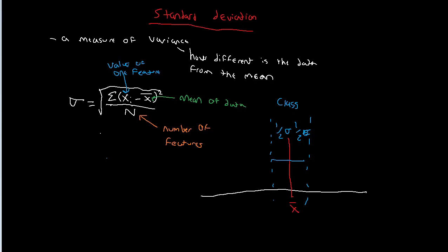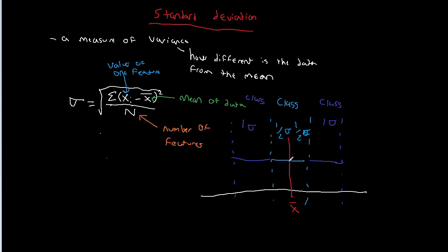That center region becomes one class. Then we go another full standard deviation to the right — that becomes another class — and another full standard deviation to the left, which becomes another class. So our breaks are going to be based on the standard deviation relative to the mean. This is different from the first couple of methods where we started with the lowest value and worked our way to the top; here we're starting at the middle and working our way out.